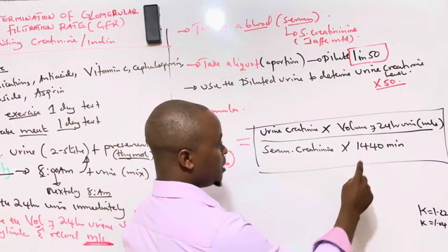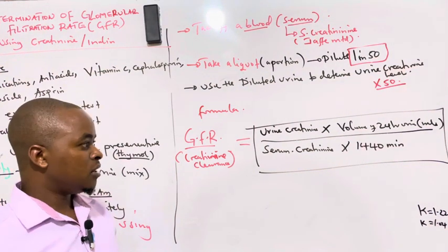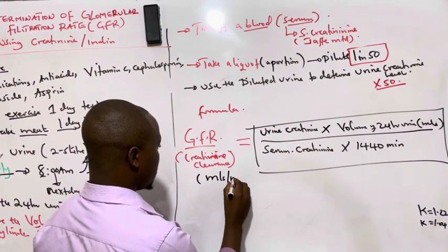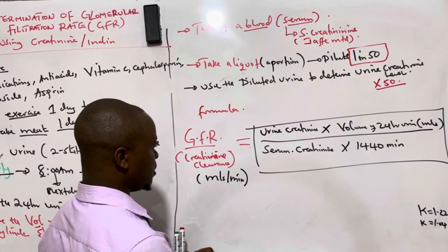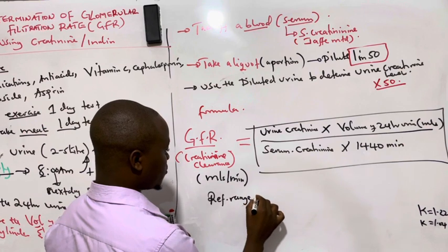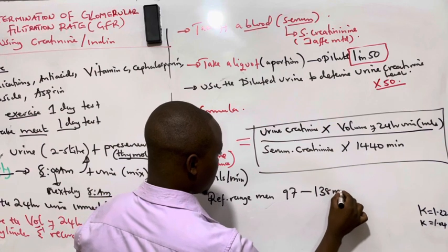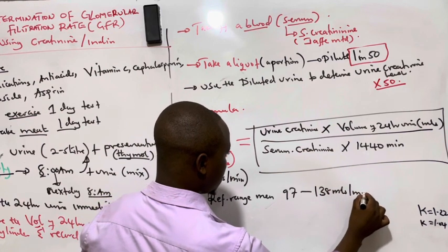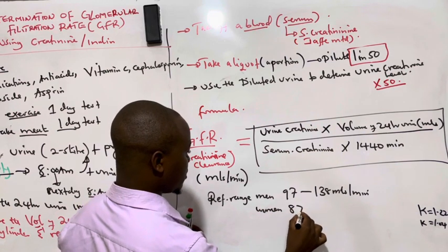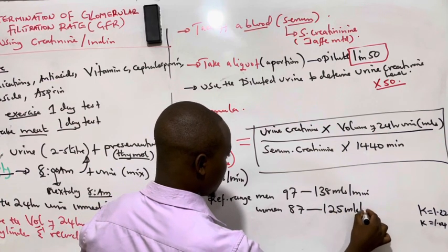The minutes used in the formula are the total minutes found in a day — 1440 minutes. The results are recorded in milliliters per minute. The reference range for men is 97 to 138 mls per minute, and for women it is 87 to 125 mls per minute.